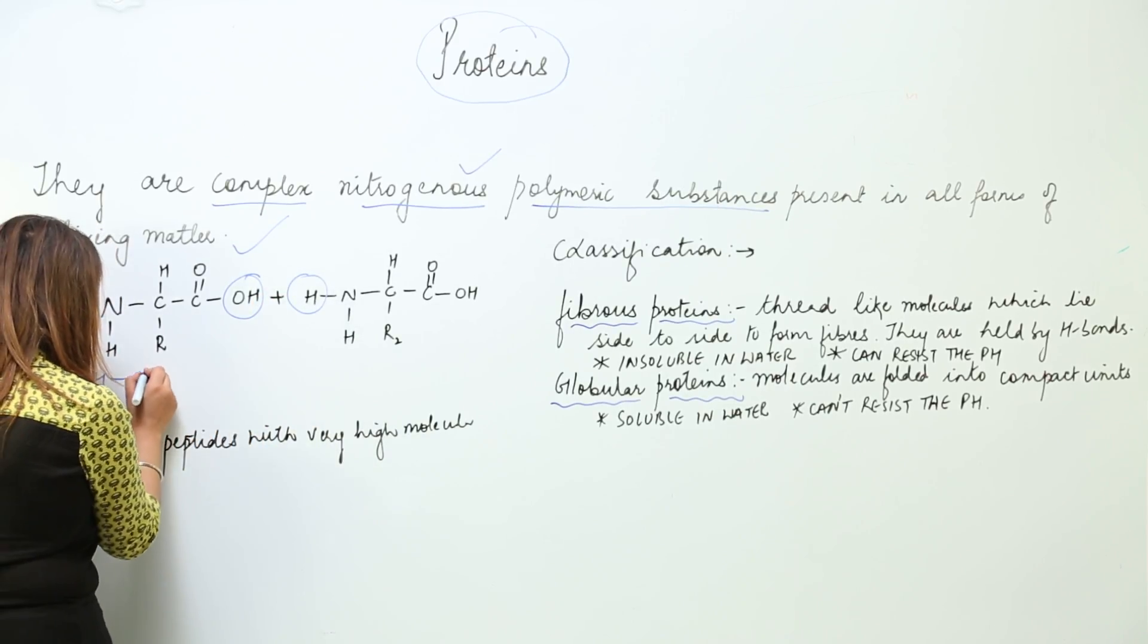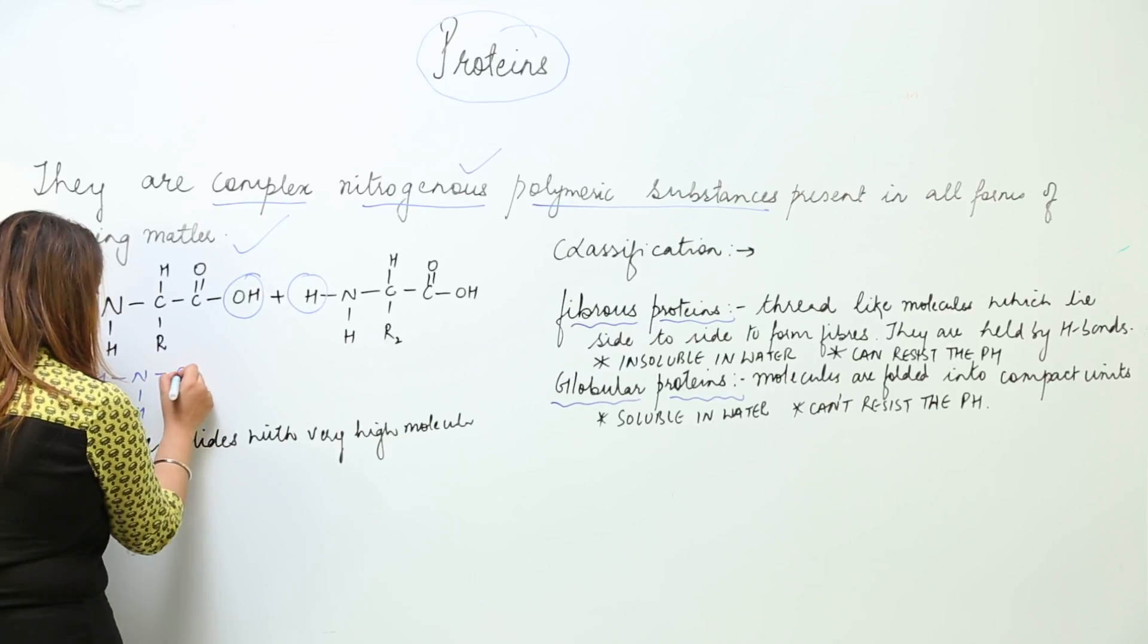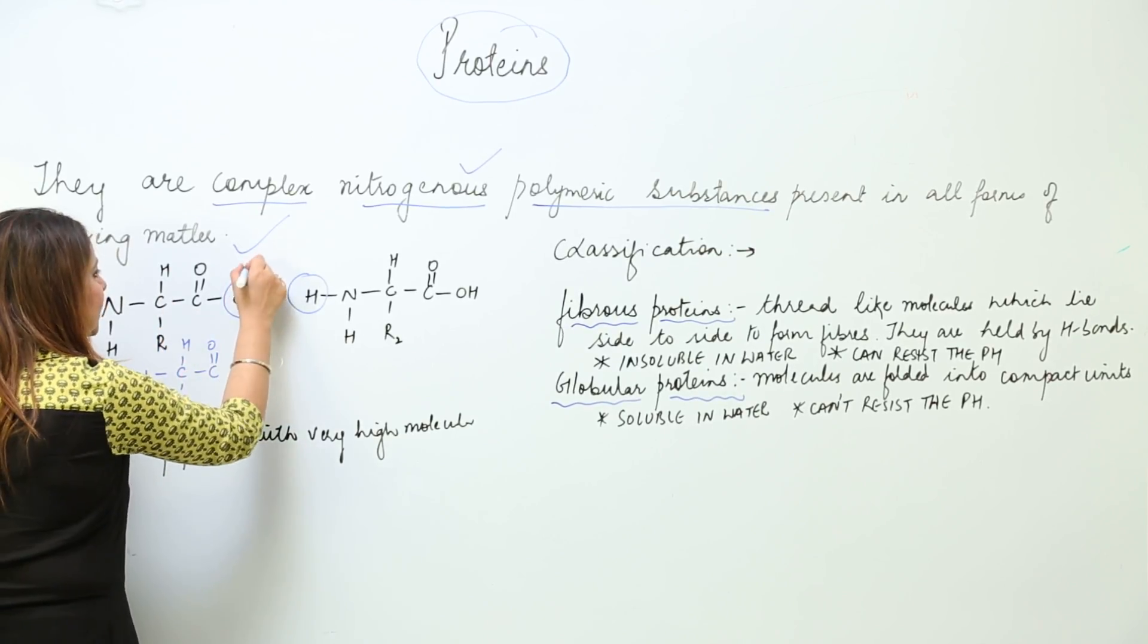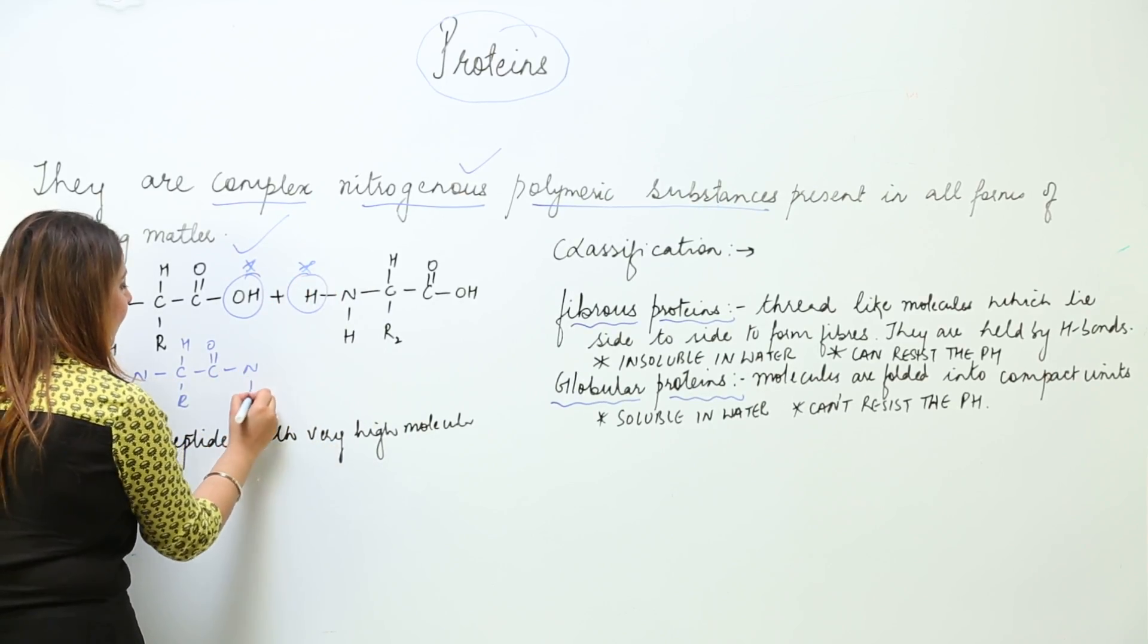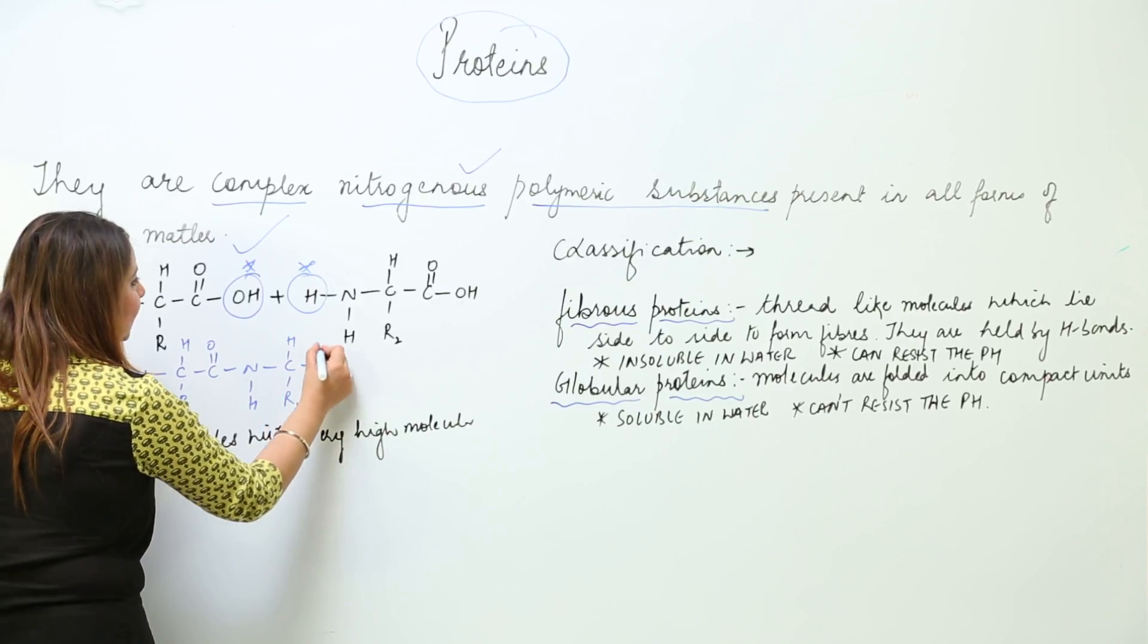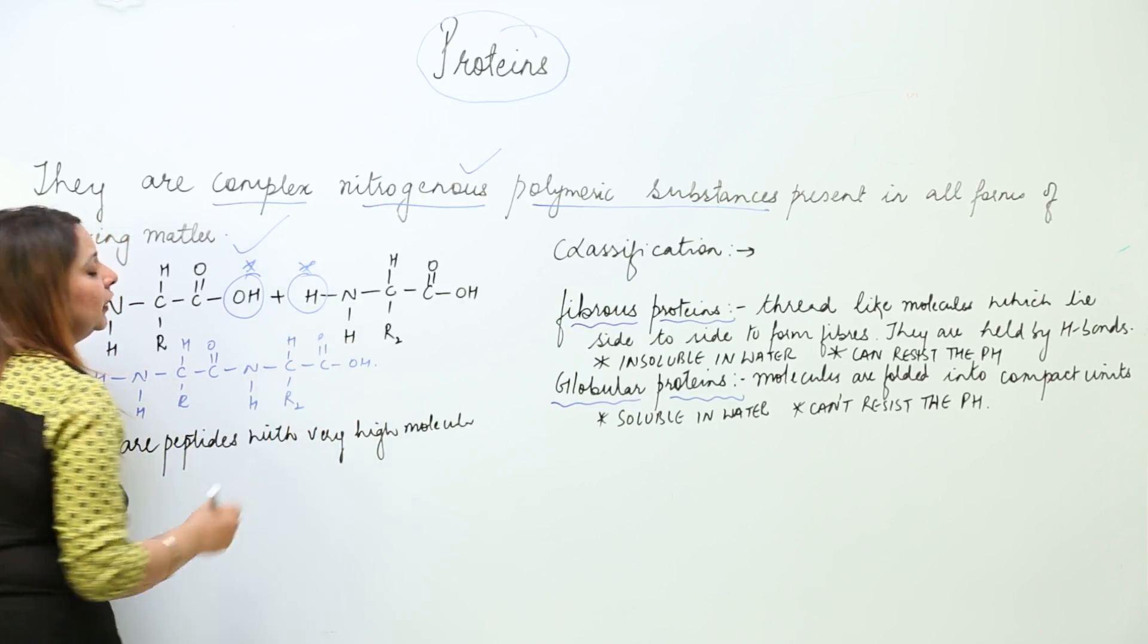So what is the formula? It is this. This remains as such. As they are written, you need to remove this OH and this H and they will get linked to it. And it becomes like this. And this is a structure for a protein.